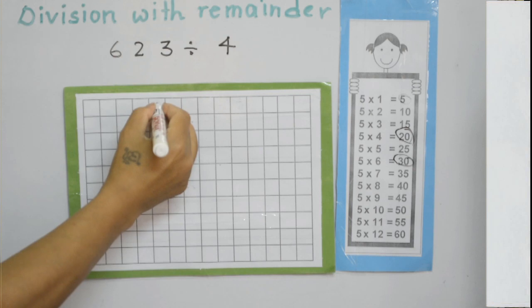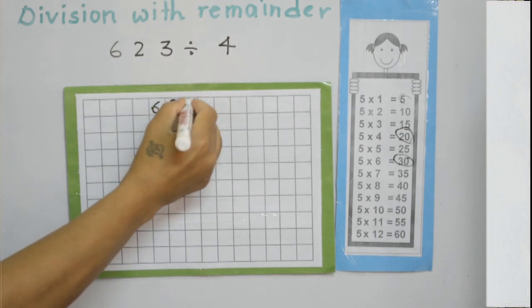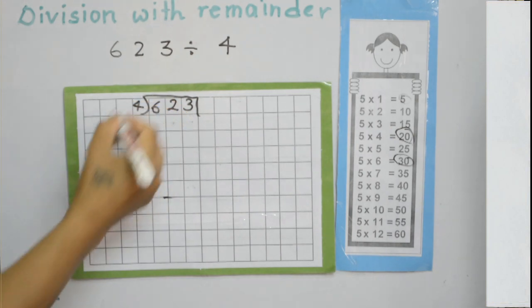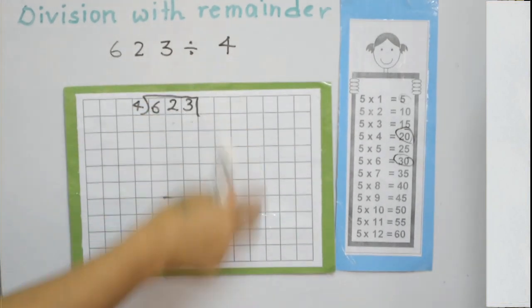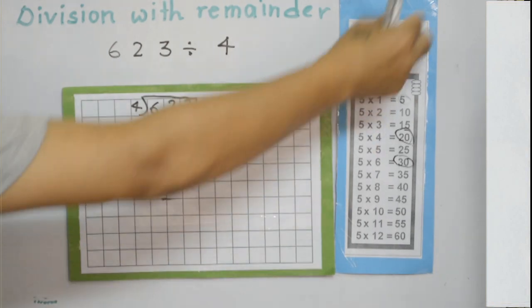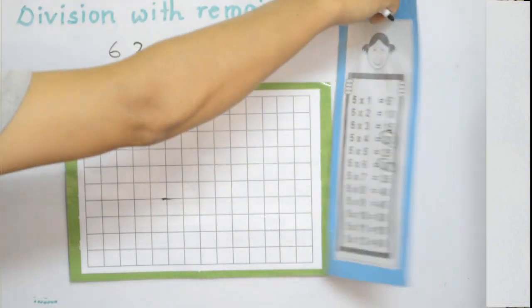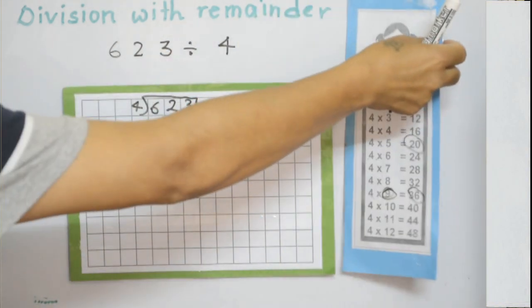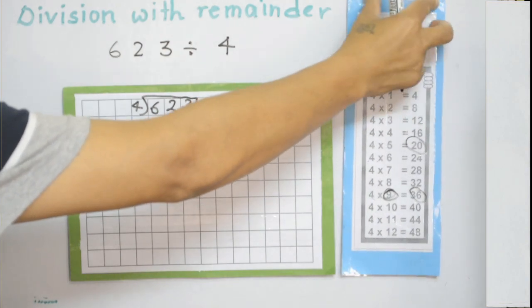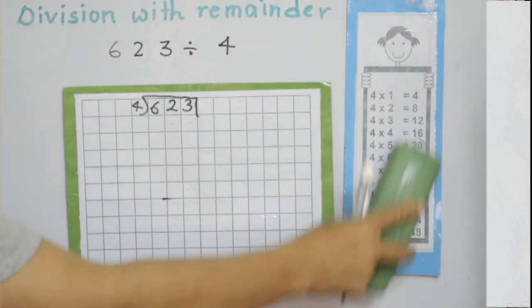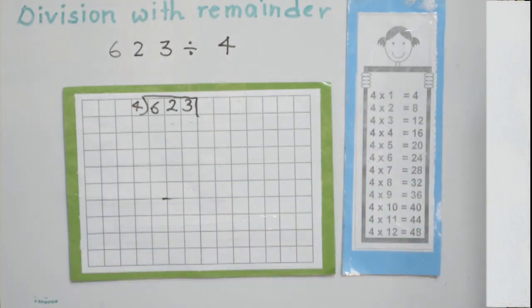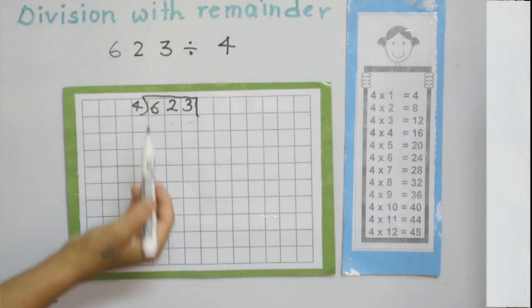The next example is 623 divided by 4. You must know the 4 times table because we are going to divide by 4.